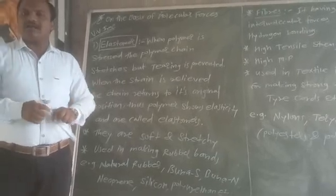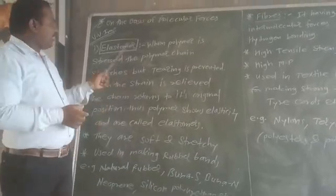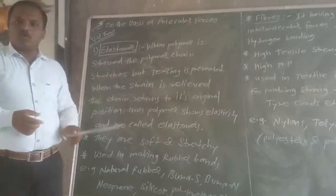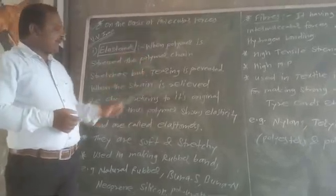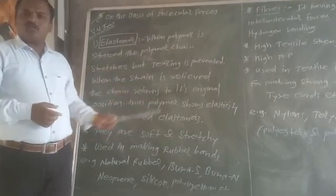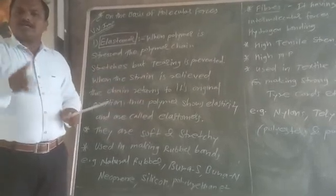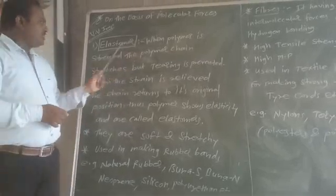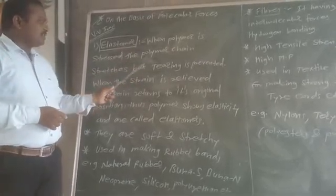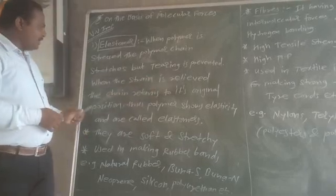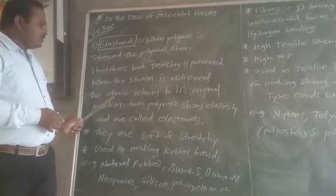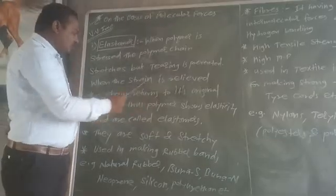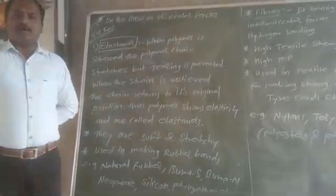When the polymer is stressed, the polymer chain stretches but tearing is prevented. When the strain is relieved, the chain returns to its original position. Thus, these polymers show elasticity and are called elastomers.